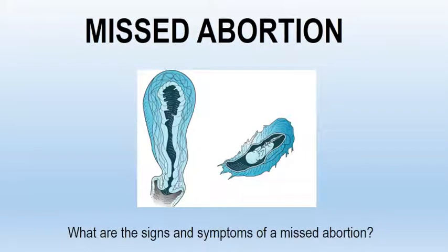A missed abortion occurs when the fetus is no longer viable but everything is still within the womb. She has cramping, she has bleeding, and the cervix is closed. In this case we need to evacuate the uterus.